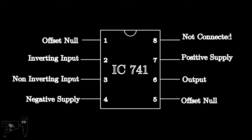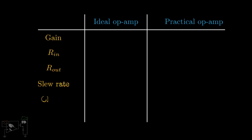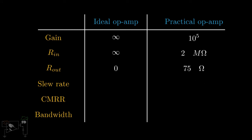As you may have guessed, real op-amps such as the IC741 do not show ideal characteristics. Here is a comparison of an ideal op-amp and a practical op-amp's specifications. The gain of a practical op-amp is usually in the range of 10 to the power 5. The input resistance is around 2 mega-ohms while the output resistance is around 75 ohms. Even though these are not ideal values, the gain and input resistance are sufficiently large to assume their values as infinity for practical purposes, and the output resistance is low enough to neglect while solving op-amp circuits. The IC741 has a slew rate of 0.5 volts per microsecond, a common-mode rejection ratio of 70 to 90 decibels, and a bandwidth of the order of 10 megahertz.